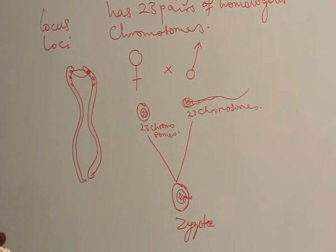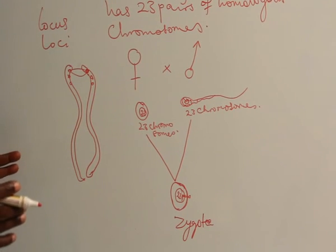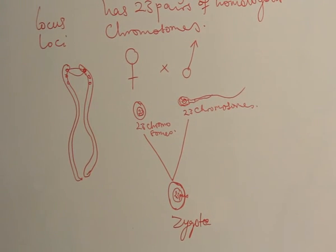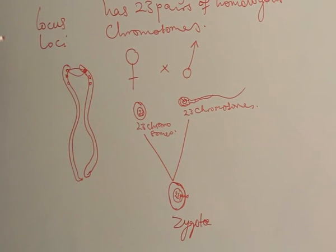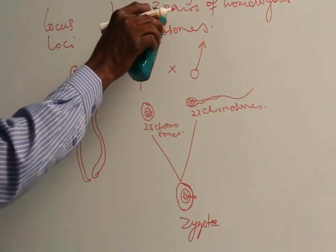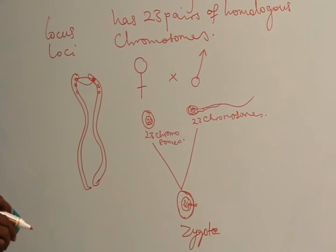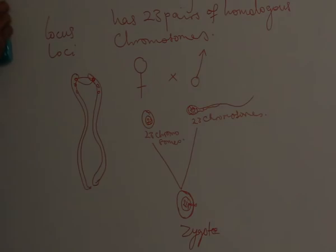So, homologous chromosomes are from two parents and they combine together in an individual, in the offspring, during fertilization. That's how we have 23 pairs of homologous chromosomes in our body cells.